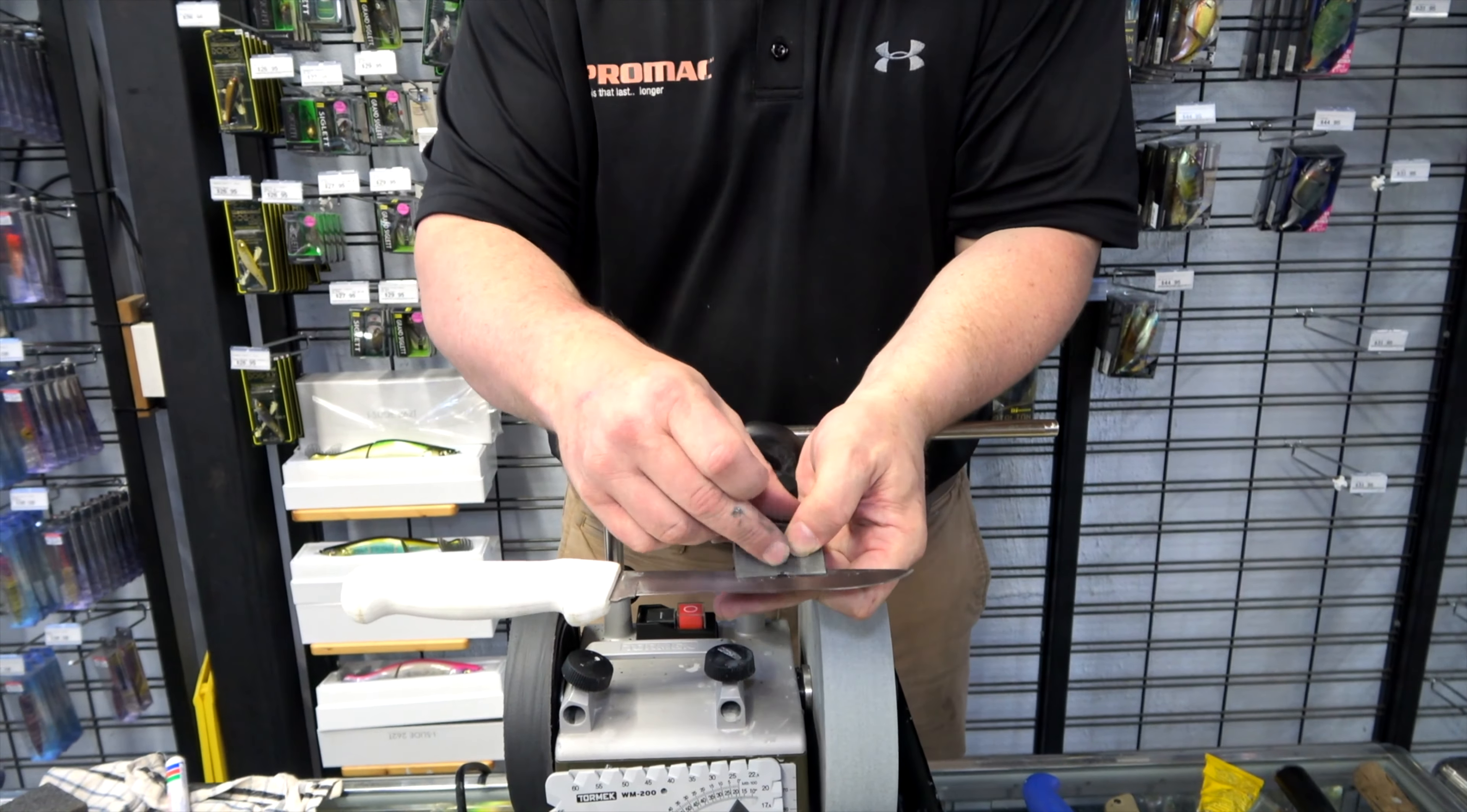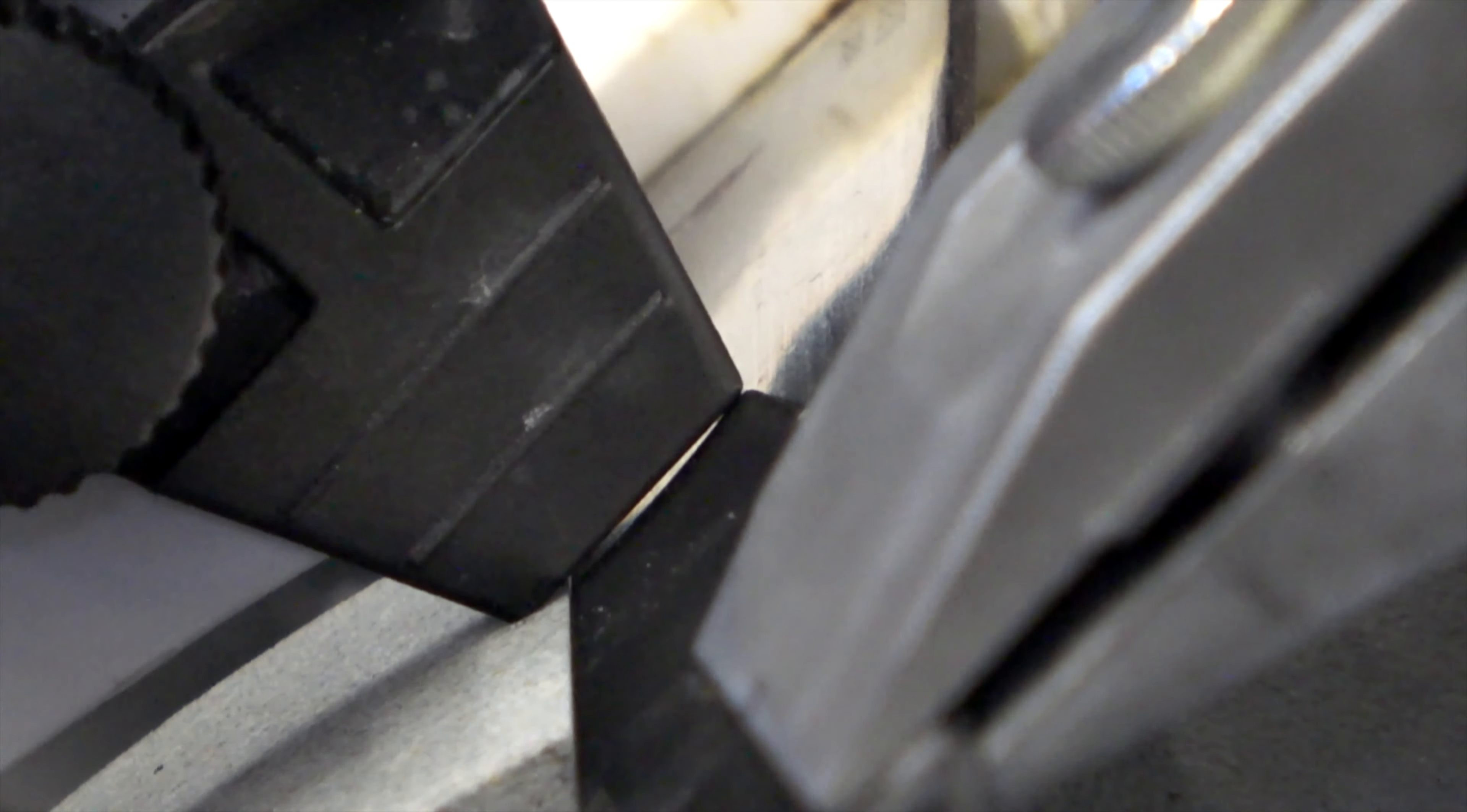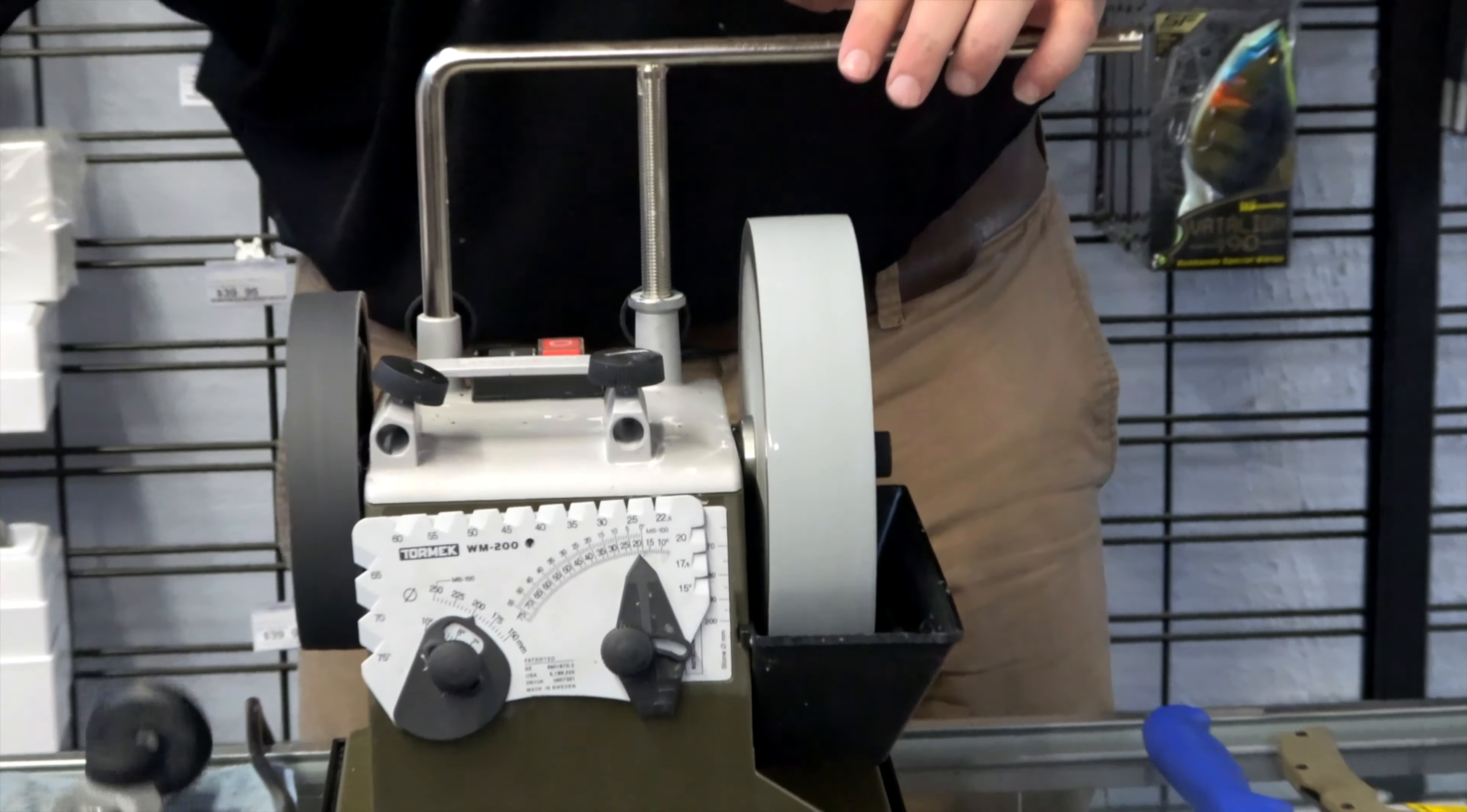We've got a lot of daylight between the knife and the Angle Master. What we want to do is have that daylight disappear. And we're going to do that by reducing the height of the support bar. So once we've got our jig in position and our angle set, just finger tighten the support bar and we're right to go.